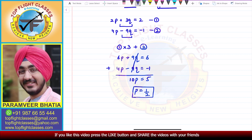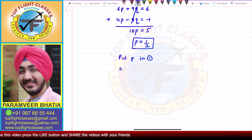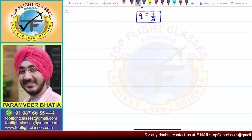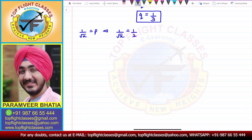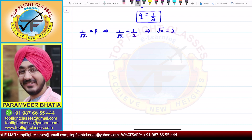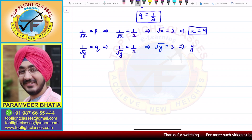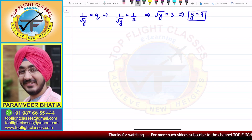So p equals 1 by 2. Substituting into the first equation: 2 times one-half plus 3q equals 2, which gives 1 plus 3q equals 2, so 3q equals 1, and q equals 1 by 3. Since p equals 1 by root x equals 1 by 2, we get root x equals 2, so x equals 4. Similarly, 1 by root y equals 1 by 3, giving root y equals 3, so y equals 9.